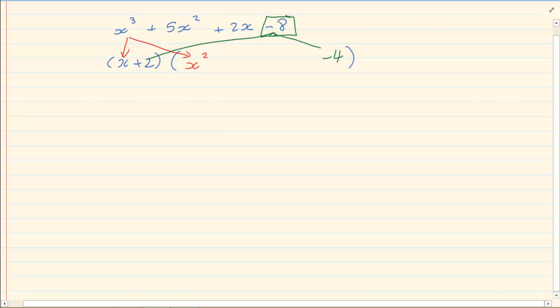What you should notice is that the last term is not always positive as you have been trained in grade 9. The last term is based on the signs that will create the last term in the expression that you started with. The next step: 2 times x² gives me 2x². What do we want? We want 5x². To get from 2x² to 5x², what do I need? I need another 3x². That would give me a perfect 5x².